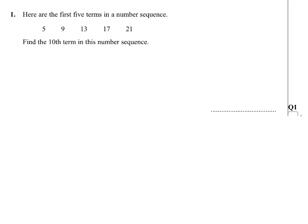So the terms are going up in 4's. 5 plus 4 is 9, 9 plus 4 is 13 and so on. So the nth term will start with a 4n.